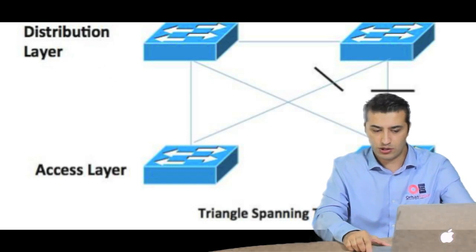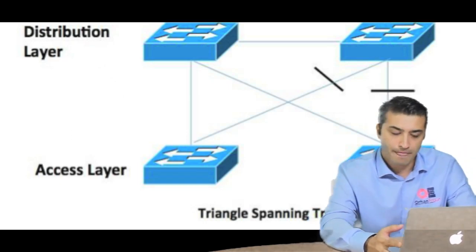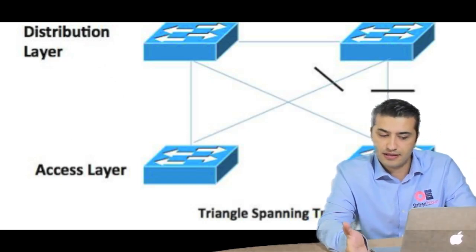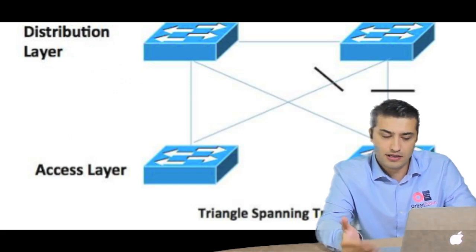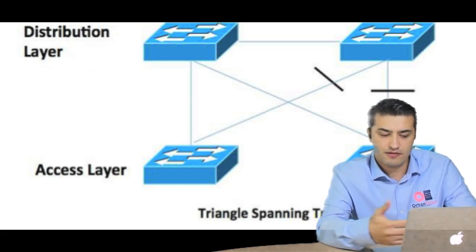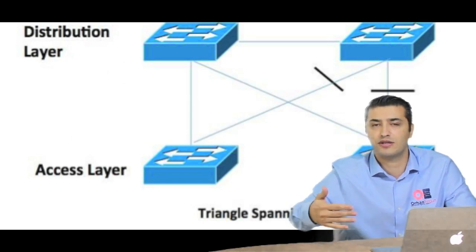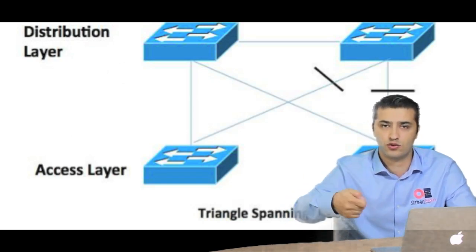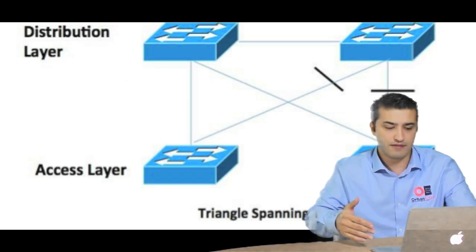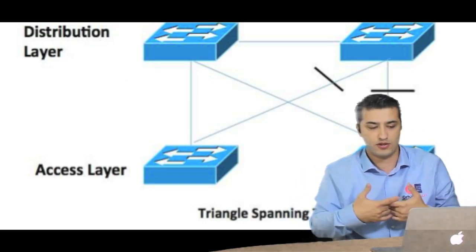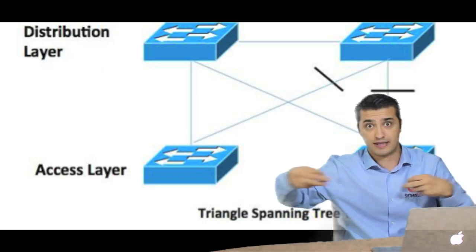I will use one topology here to explain better the spanning tree. So in this topology, we have layer 2 access design. Layer 2 access design means basically we have here access and distribution layer switches. Access layer switches are used to connect users, IP phones, access points, all those stuff.